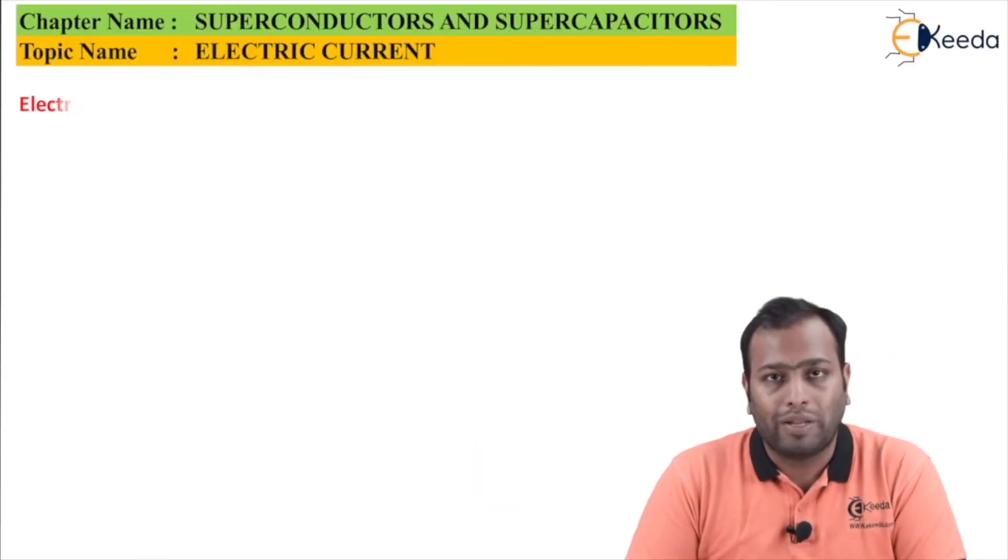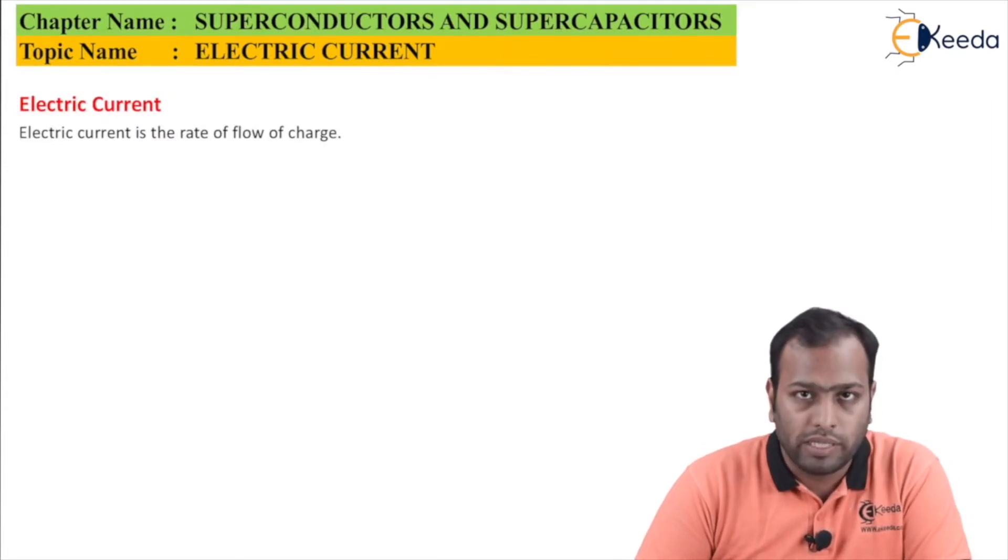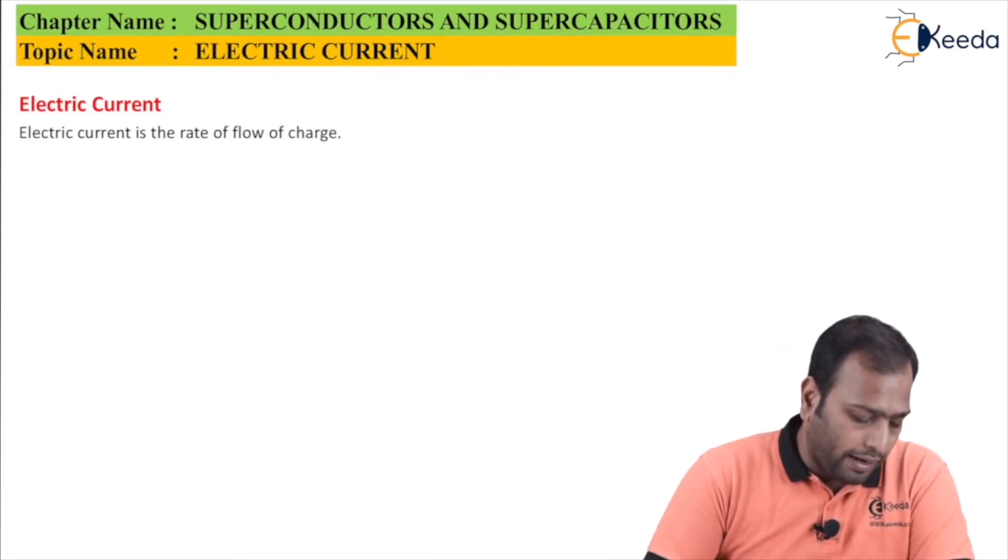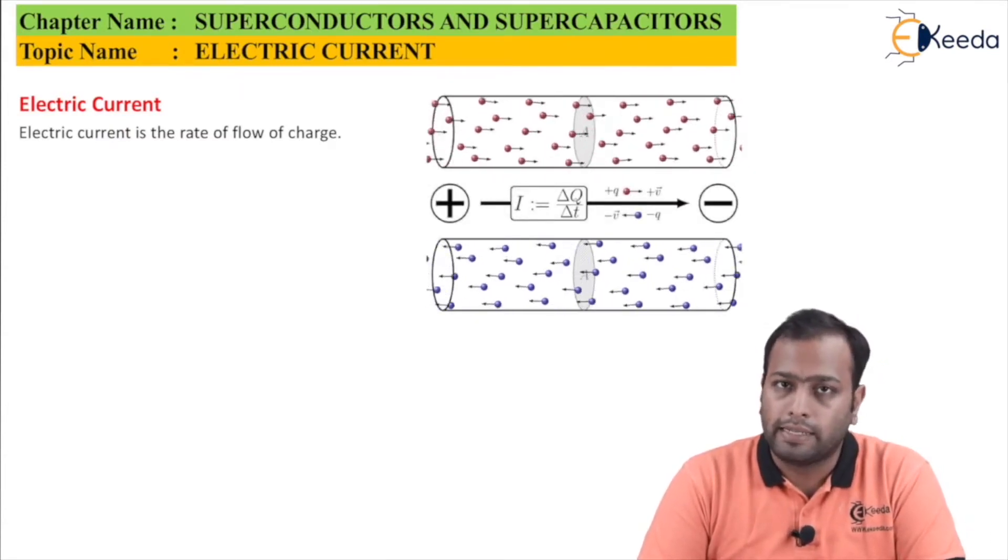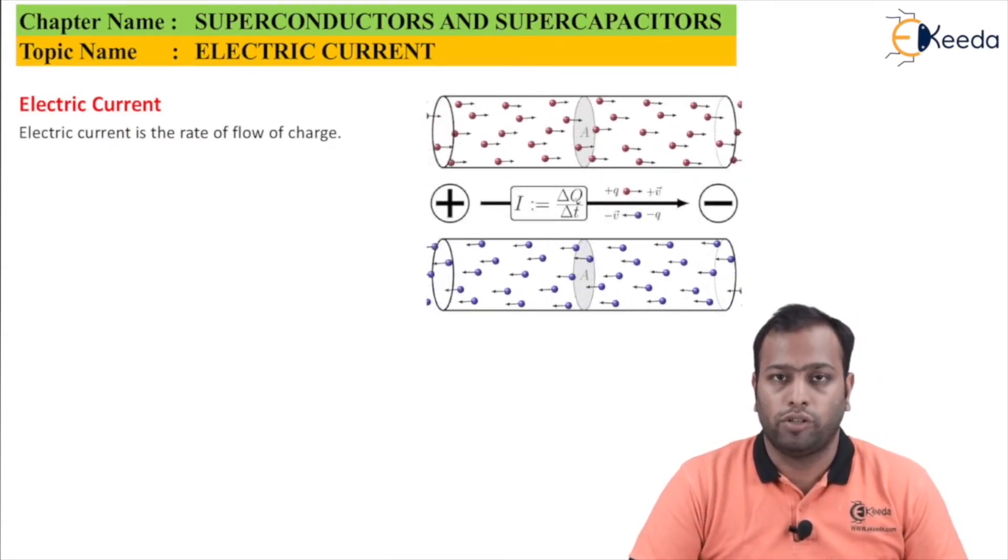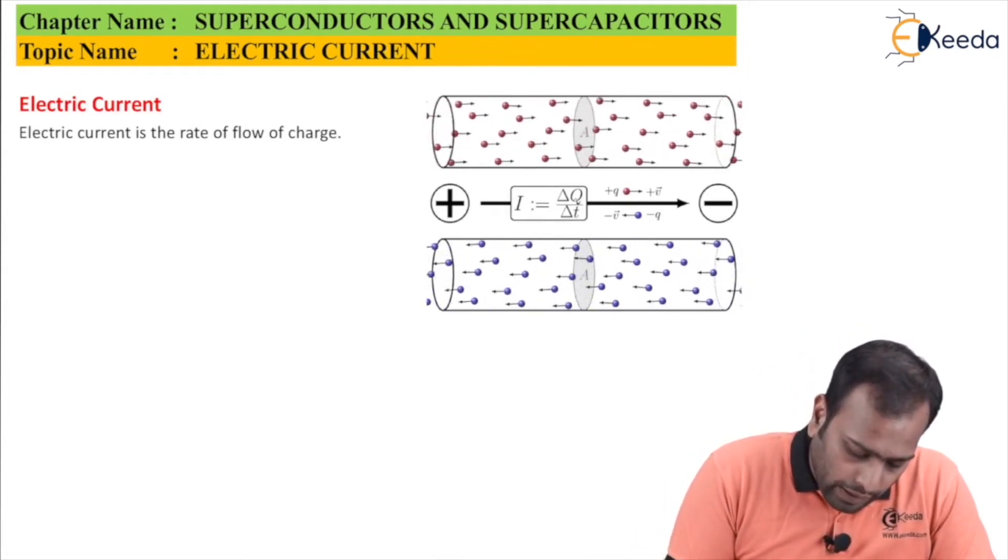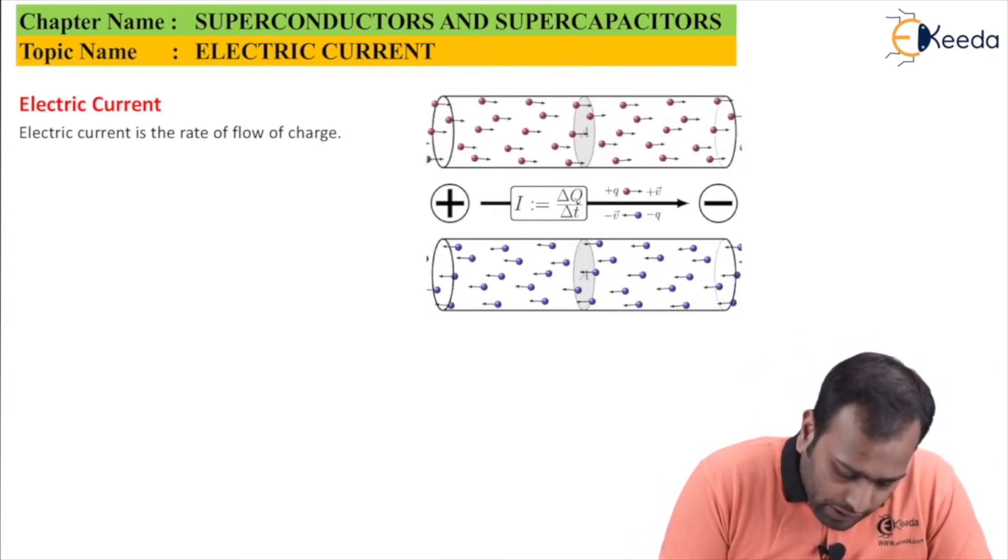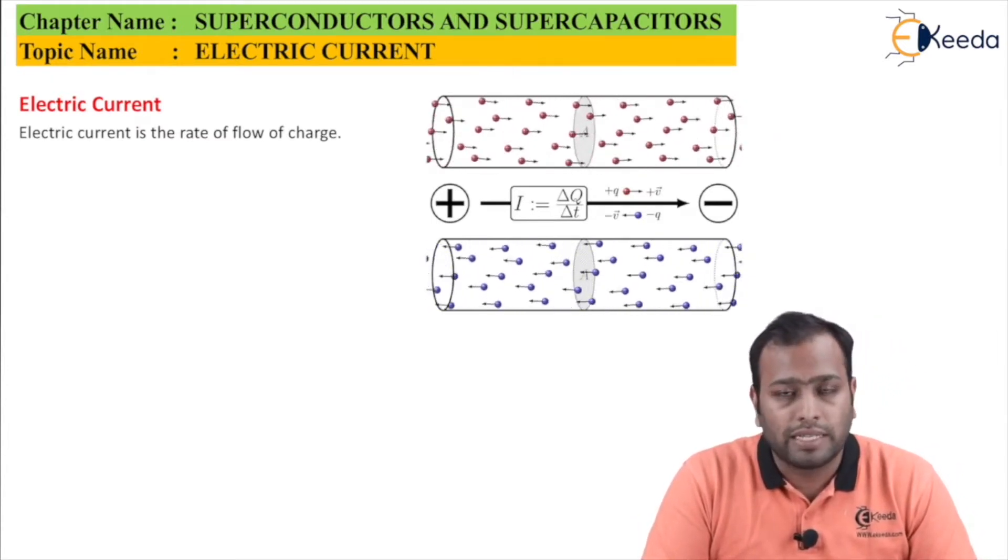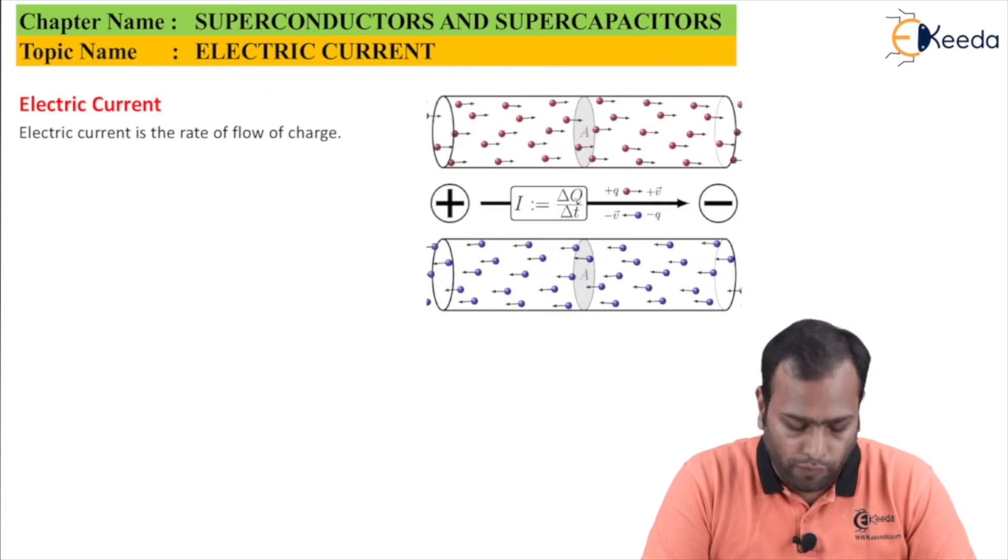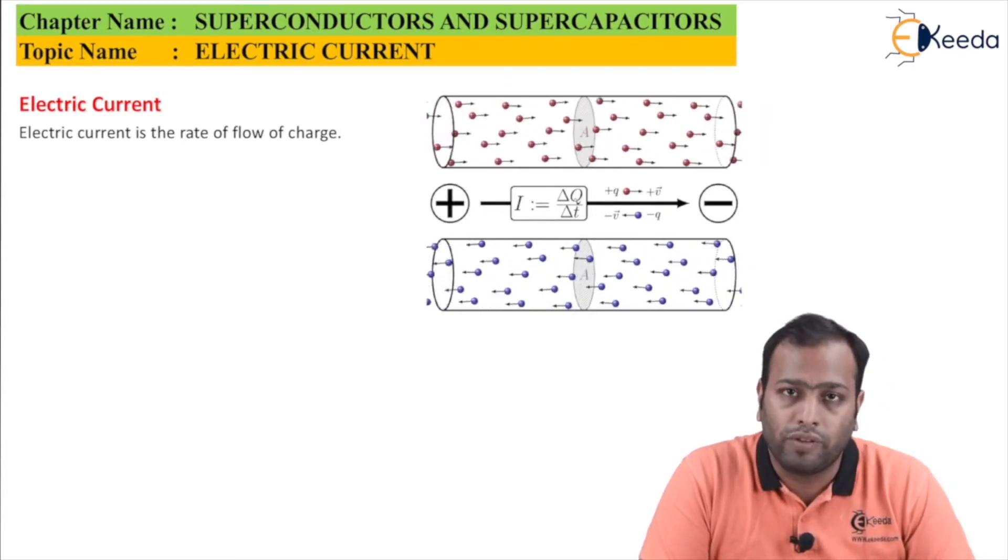Let's first talk about electric current. These are the prerequisites. Electric current is defined as the rate of flow of charge, the rate at which your charge flows. As you can see here, we have positive charges and negative charges. The positive charge and negative charge will have opposite directions of flow, and hence the current is defined as the rate of flow of either the positive charge or the negative charge.